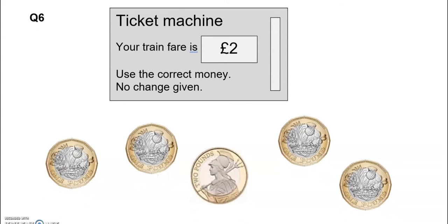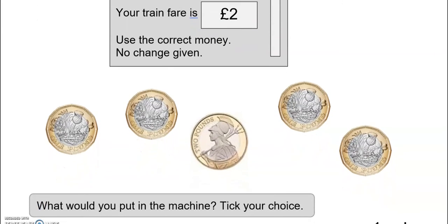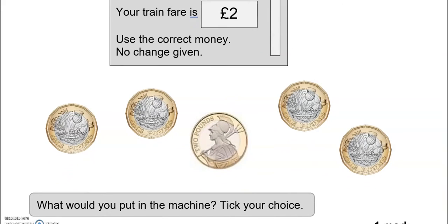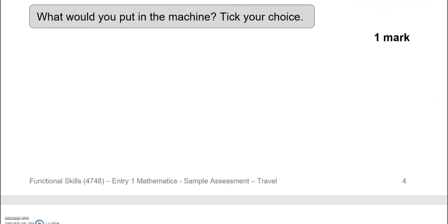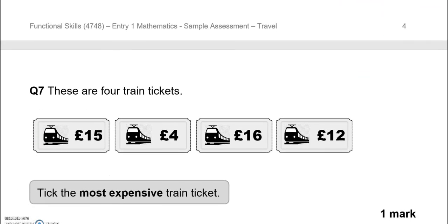Question 6. We've got a ticket machine. Your train fare is £2. Use the correct money. No change given. What would you put in the machine? Tick your choice. I'd put this one. It's exactly £2. But you could put two £1 coins as well.